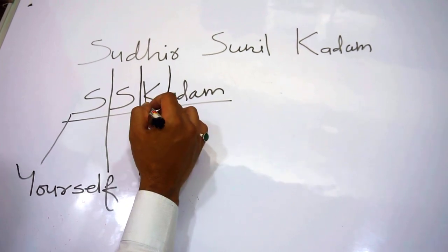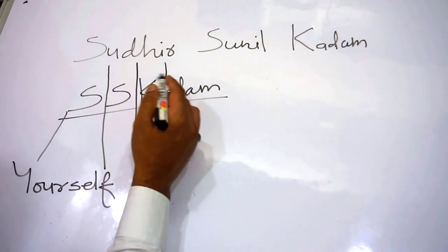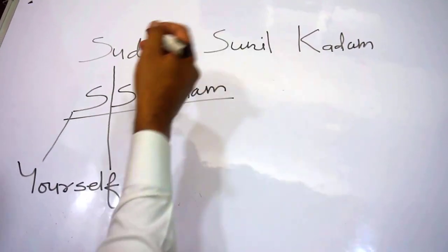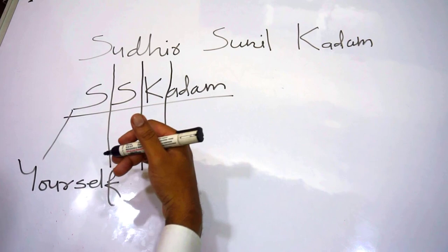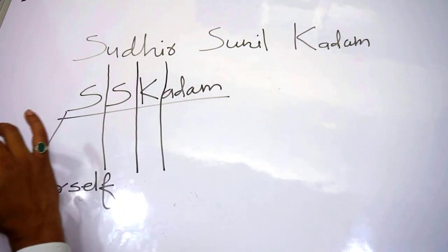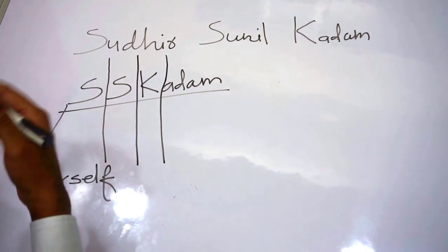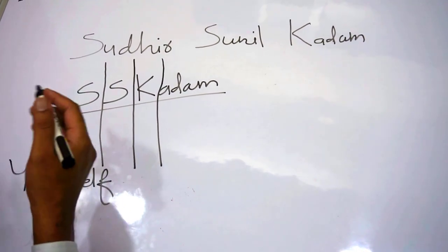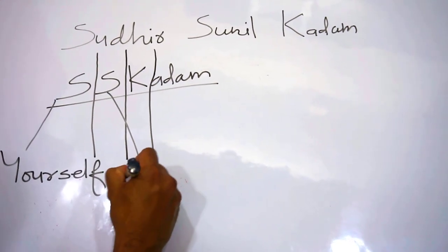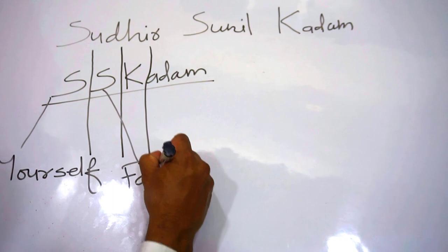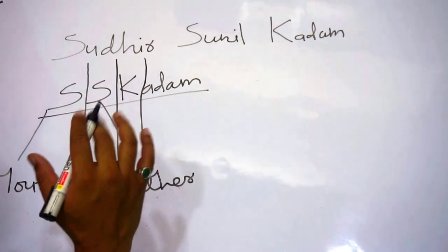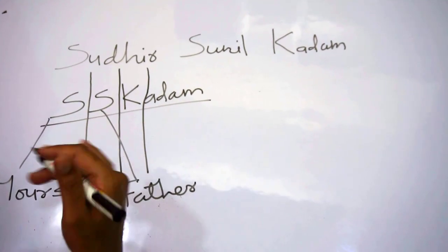If the father's name is not there — for example, someone writes 'Sudhir Kumar' — then Kumar will be treated as the father figure. The way he or she writes 'Kumar' will reflect how they behave in a fatherly manner. So the second initial will represent your father, indicating the way you perceive your father and the way you will behave as a father.